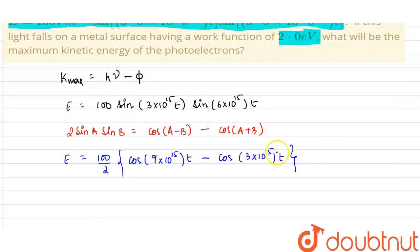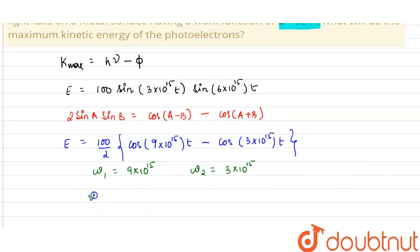Now from the equation we can easily identify that we have 2 omega. One is 9 into 10 raised by 15 and the second one is 3 into 10 raised by 15. So the frequency is omega upon 2 pi.